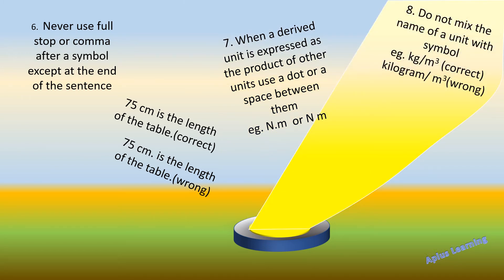The next rule: do not mix the name of a unit with its symbol. A unit name and a symbol should not be mixed together. For example, 'kg per meter cube' — this first form is correct. But writing 'kilogram' as the full name alongside a symbol is mixing a unit name with a symbol, which is not the correct way of representing it.